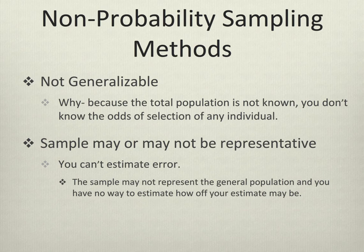The primary drawback to non-probability sampling methods has to do with generalizability. Non-probability sampling methods are not generalizable. Even though in this class we're going to use statistics to make estimates, in reality you shouldn't do that. We can't estimate error, we don't know the odds of selection, and therefore we can't really generalize to a larger population. We can only really make statements about our sample.